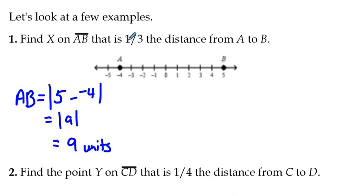Now, the point X, it's a third the distance from A to B. So what we need to do is take one-third of 9. One-third of 9 is 3. So the point X, that's one-third the distance from A, has to be 3 units away from A.